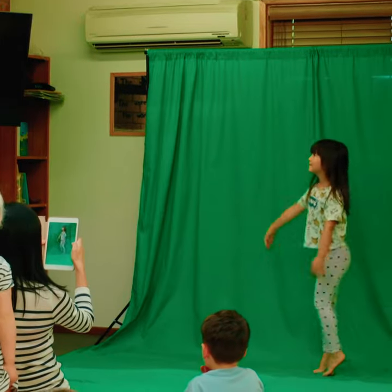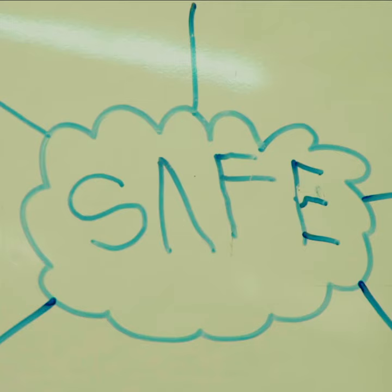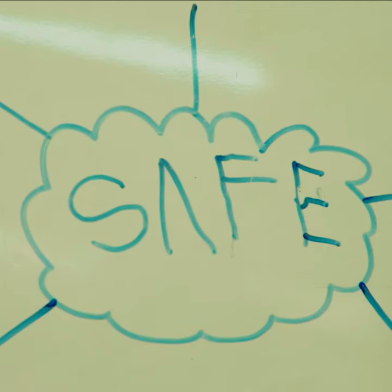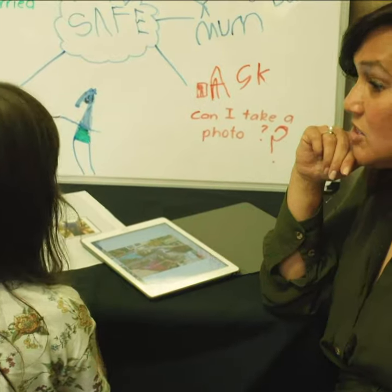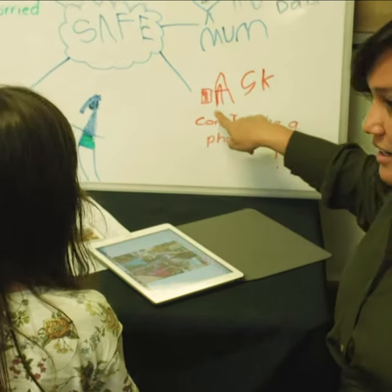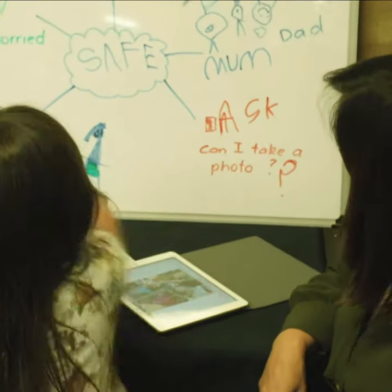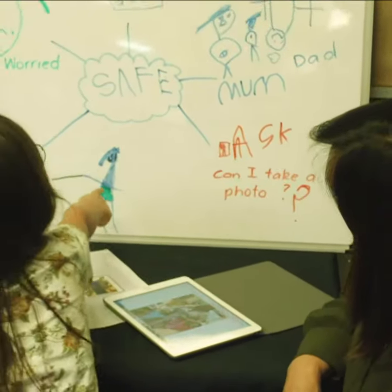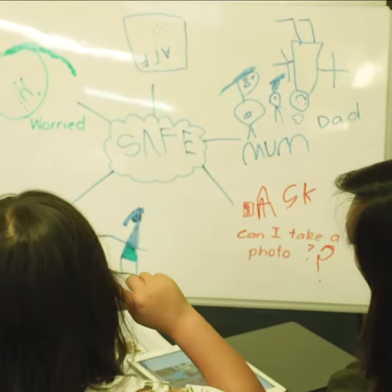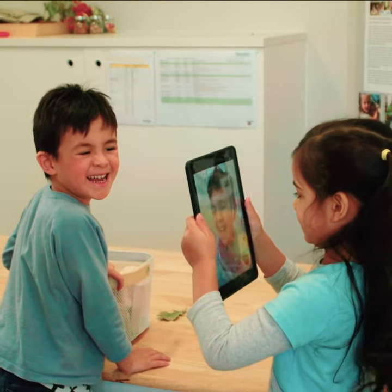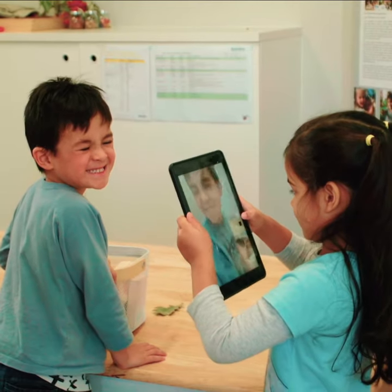The eSafety Early Years Program is a suite of online safety resources that aims to provide online safety advice and tips for children, their families and educators. This program focuses on building knowledge in early learning settings so they can guide children and their families on online safety.